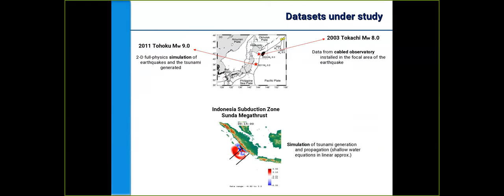To our knowledge, there's no DAS dataset that contains a tsunami signal. We're using a full physics simulation of the Tohoku magnitude 9 earthquake. We're also using data from a cabled observatory that captured the Tokachi earthquake and tsunami from 2003. We also ran a simulation of the Indonesia subduction zone megathrust, simulating two arrays located offshore of an Indonesian island. We also studied a generic scenario with a megathrust and tsunami, simulating a series of arrays.